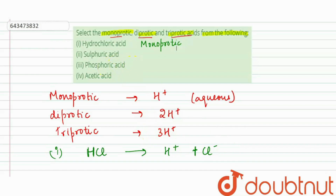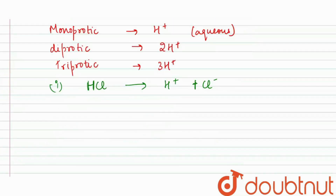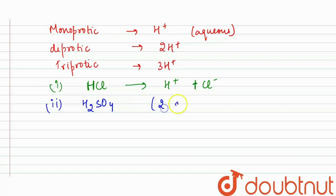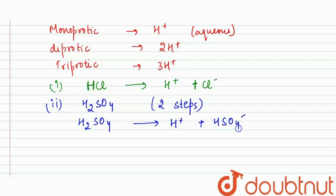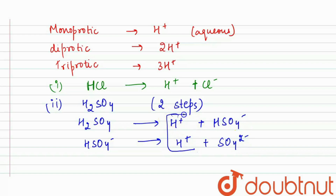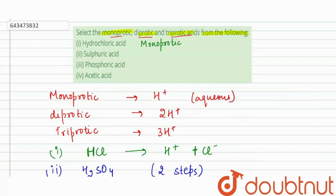Second, we have sulfuric acid with formula H₂SO₄. It dissociates in two steps: first, H₂SO₄ → H⁺ + HSO₄⁻; second, HSO₄⁻ → H⁺ + SO₄²⁻. We get two H⁺ ions, so sulfuric acid is diprotic.